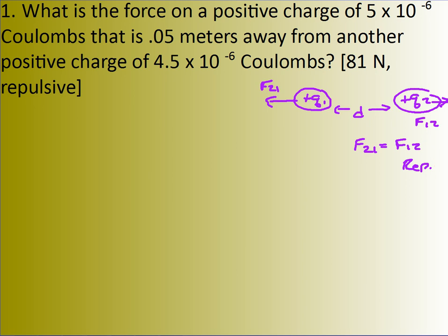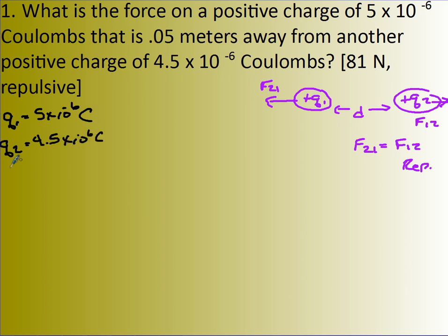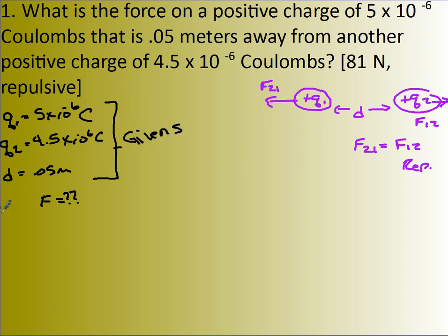Now let's find the magnitude of the force itself. What are my givens? Q1 is 5 times 10 to the negative 6 Coulombs. The second charge is 4.5 times 10 to the negative 6 Coulombs. And the distance apart is 0.05 meters. These are all in Coulombs; this is in meters. So it's pretty straightforward to find the force. F is my unknown, and my equation is F equals K Q1 Q2 divided by r squared.